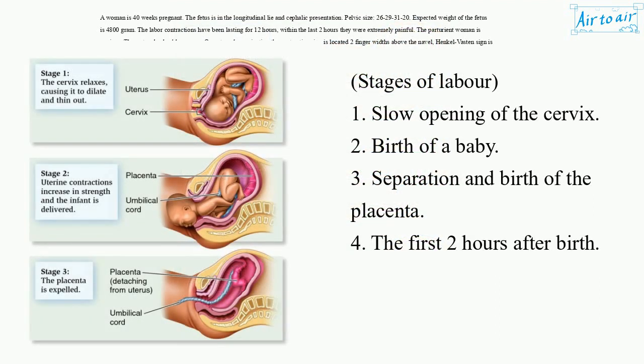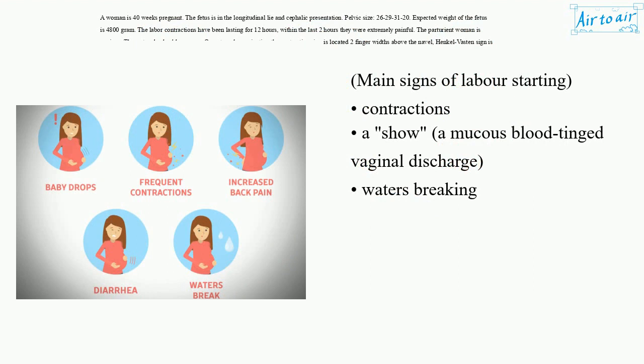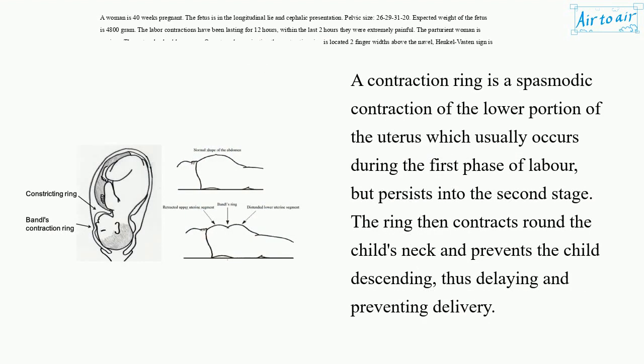Stages of labor: 1. Slow opening of the cervix. 2. Birth of a baby. 3. Separation and birth of the placenta. 4. The first two hours after birth. Main signs of labor starting: contractions, show (a mucous blood-tinged vaginal discharge), and waters breaking. A contraction ring is a spasmodic contraction of the lower portion of the uterus which usually occurs during the first phase of labor but persists into the second stage. The ring contracts round the child's neck and prevents the child descending, thus delaying and preventing delivery.